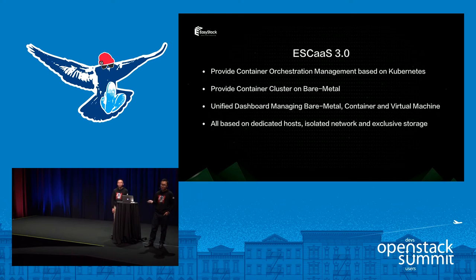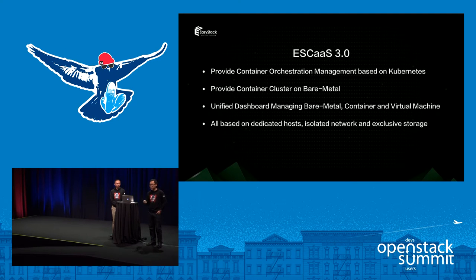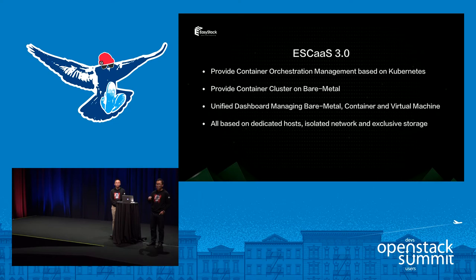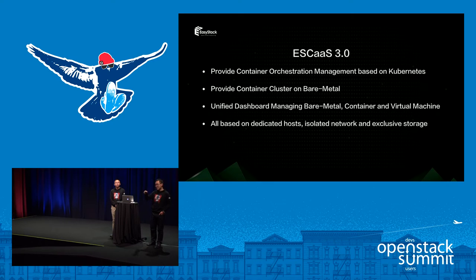Now let's talk about ESCAST 3.0. In this version, we provide container orchestration management based on Kubernetes. You can use the dashboard to manage your pods, services, and replication controllers. We can provide a container cluster on bare metal, based on bare metal multi-tenancy features — each tenant can have a bare metal cluster running Kubernetes and manage containerized applications via the dashboard. This is all based on dedicated hosts, isolated networks, and exclusive storage, giving you a totally isolated OpenStack Cloud with the ability to manage VMs and bare metal.